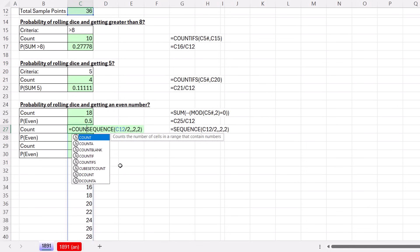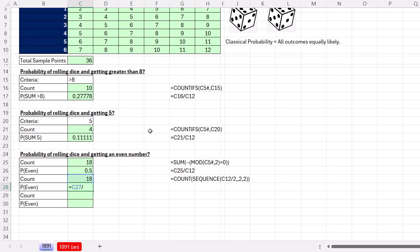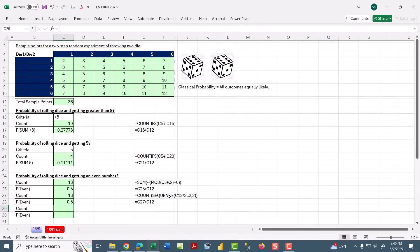So now we can, because they're numbers, we can count. Close parentheses. And we get eighteen. Now we can calculate the probability. So even if you don't like rolling dice, you can have fun in Excel calculating the probability.